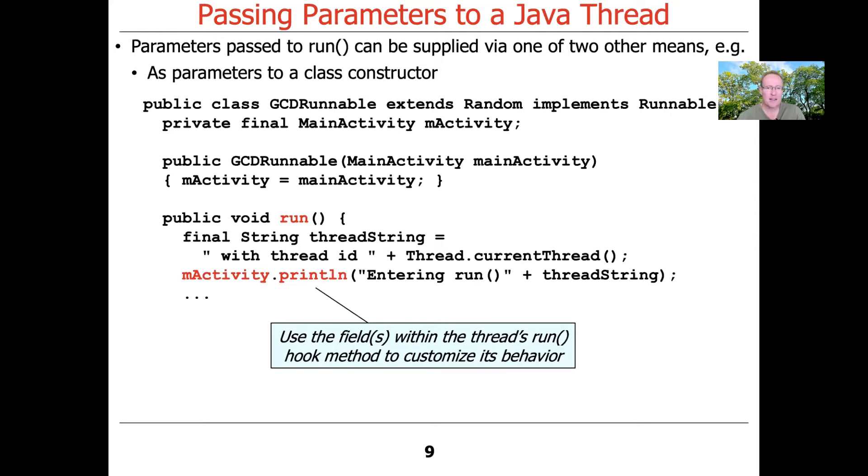So you can see here, it goes ahead and prints the diagnostic information when we enter the run method plus a string that says what the thread ID is and so on and so forth. So that's how we communicate from the thread that's running in the background to the activity that's running in the foreground in a different thread and get that to display the results to the user.